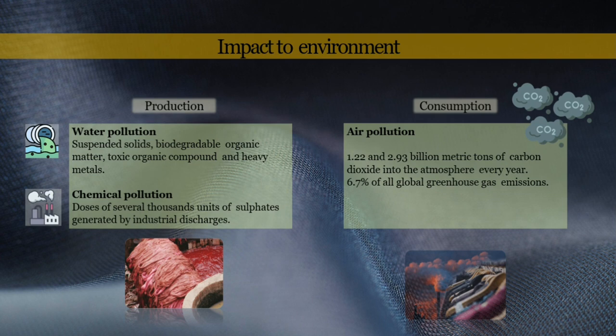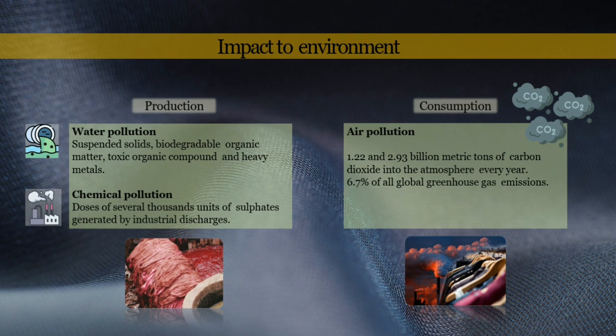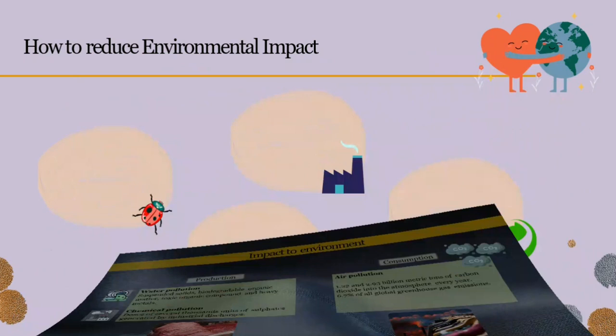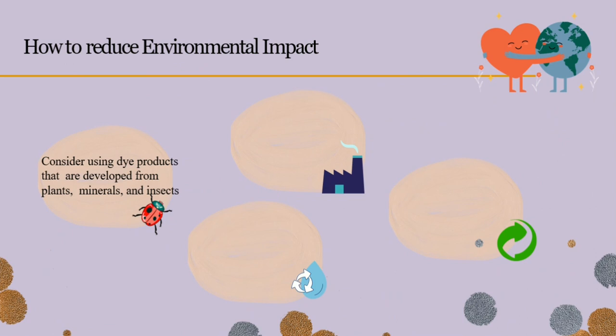In terms of consumption, the production of silk leads to air pollution, because the textile industry pumps between 1.22 and 2.93 billion metric tons of carbon dioxide into the atmosphere every year. Luckily, we can reduce the environmental impact by using dye products developed from plants, minerals, and insects; using scrubbers to collect particulate matter; reusing water from pre-treatment processes; and reusing steam condensate.